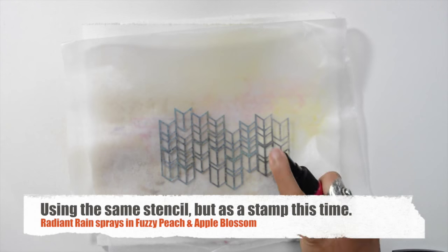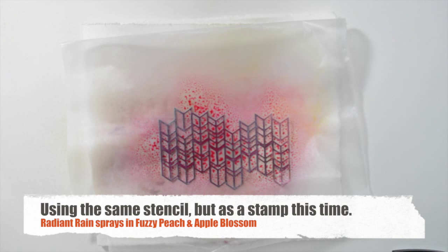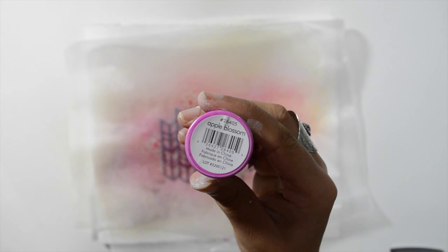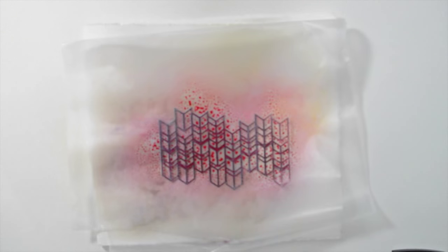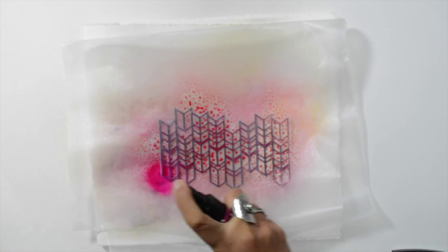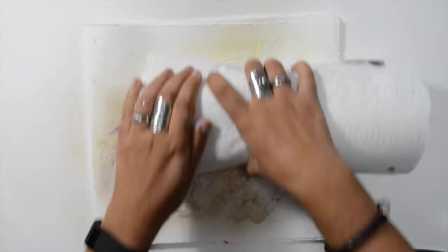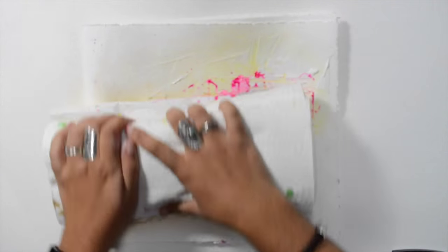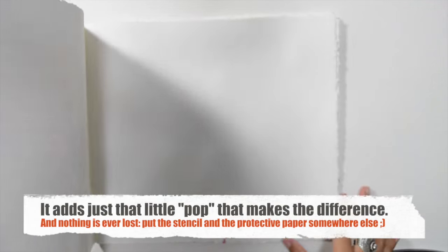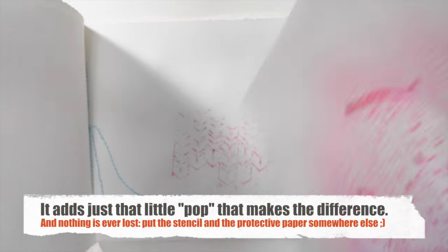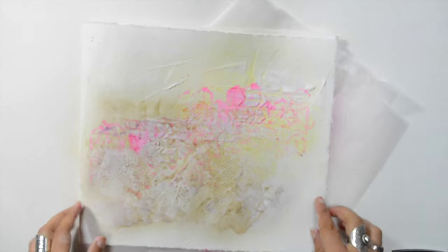Using the same stencil as the first layer but as a stamp this time. Using two shades of pink because it's the color that was in there. It's okay, you can't really see what was there, what was the shape, but that's fine. You just add that little color and nothing is ever lost.